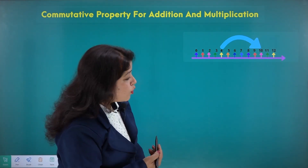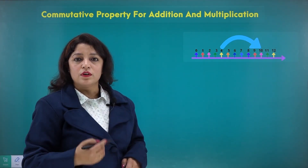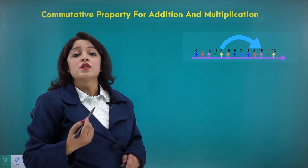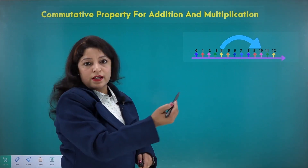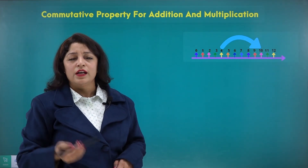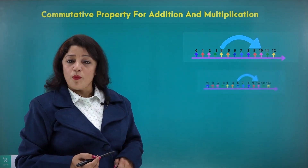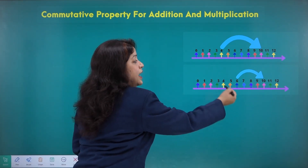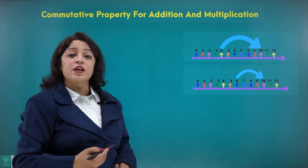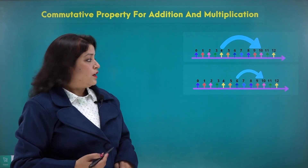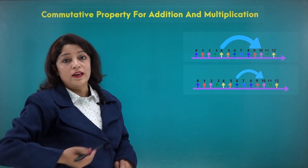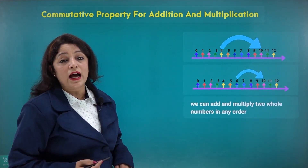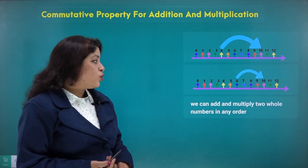If I say 4 plus some number gives you 10, see how many places you have jumped up — you have jumped 6 places. So 4 plus 6 gives you 10. Is it the same if I do the opposite? If I move from 6 and move 4 steps to the right, I'll reach 10 again.